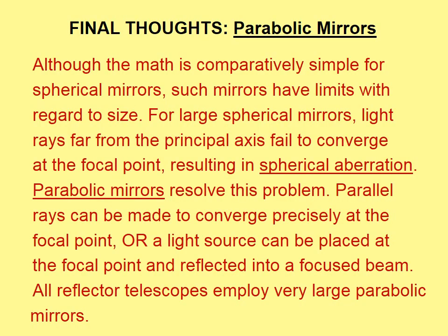Although the math is comparatively simple for spherical mirrors, such mirrors have limits with regard to size. For large spherical mirrors, light rays far from the principal axis fail to converge at the focal point, resulting in spherical aberration. Parabolic mirrors resolve this problem. Parallel rays can be made to converge precisely at the focal point, or a light source can be placed at the focal point and reflected into a focused beam. All reflector telescopes employ very large parabolic mirrors.